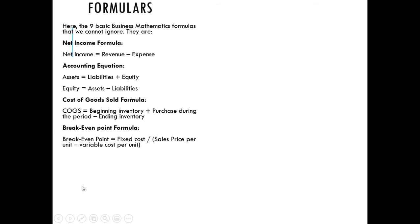How do you get the break-even point? The formula is: break-even point equals fixed cost divided by (selling price per unit minus variable cost per unit). This gives us the break-even point in units. If you want the break-even point in price, then: break-even point in price equals break-even point in units times selling price per unit.